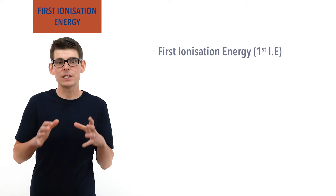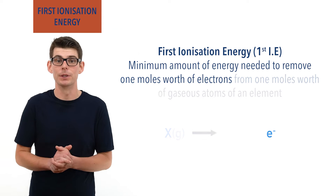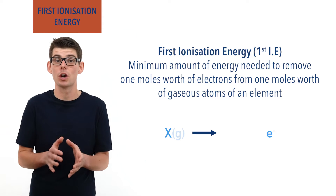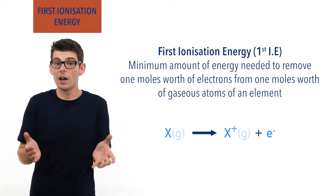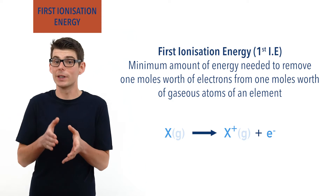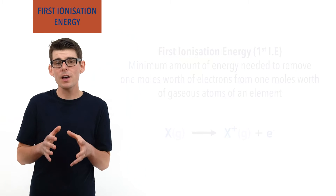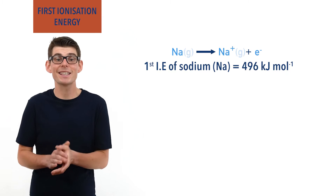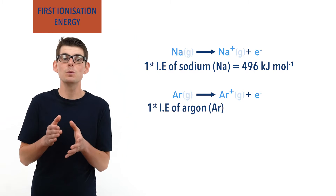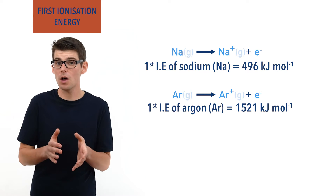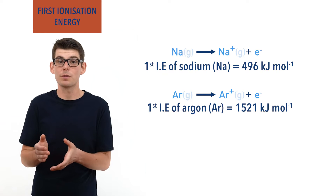First ionization energy is the minimum amount of energy required to remove one mole's worth of electrons from one mole's worth of gaseous atoms of an element, to form one mole's worth of gaseous ions with a charge of 1+. This can be thought of as a measure of how hard it is to remove an electron from an atom. A high first ionization energy means lots of energy is needed, whereas a low first ionization energy means only a small amount is needed. For example, the first ionization energy of sodium is 496 kJ/mol, whereas the first ionization energy of argon is 1521 kJ/mol — showing it is much harder to remove an electron from argon than from sodium.